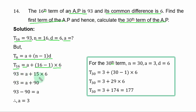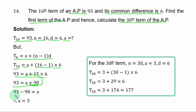T sub 16 is 93. You have 93 equals A plus 90. Transferring plus 90 to the left-hand side, A equals 93 minus 90, so A equals 3.